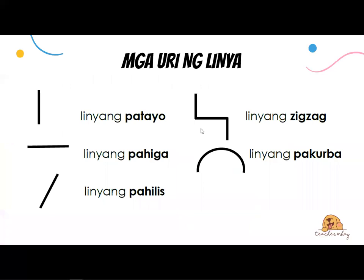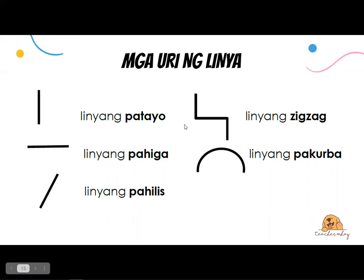May mga iba't ibang uri ng linya tayong tinatawag. The first one ay ang linyang patayo. Pangalawa, linyang pahiga. Pangatlo, linyang pahilis. And then, we have what we call zigzag. And the last one ay linyang pakurba — the curved lines that we call in English. Uditin natin ha: linyang patayo, linyang pahiga, linyang pahilis, linyang zigzag, at linyang pakurba.